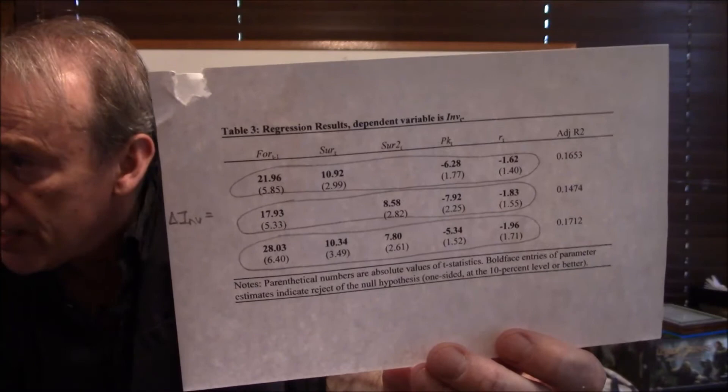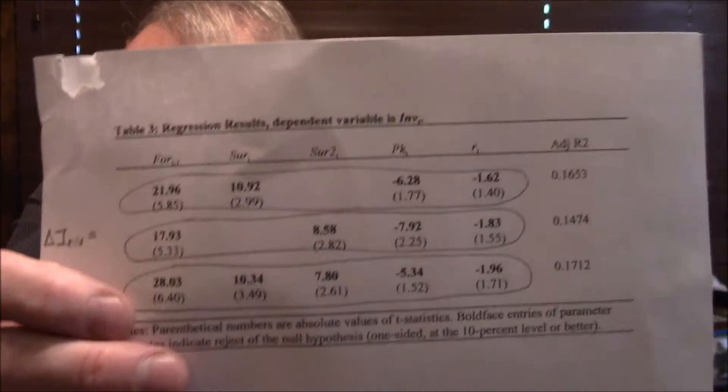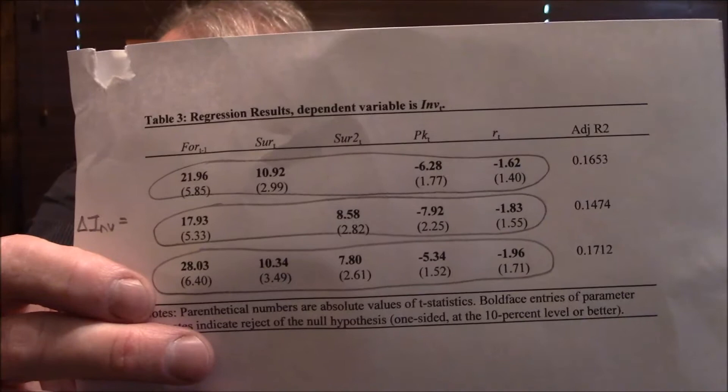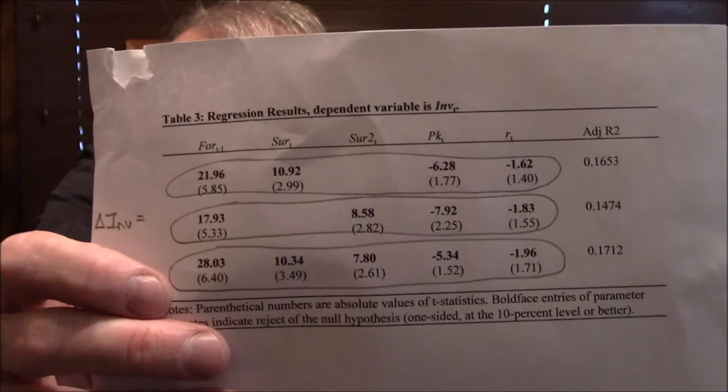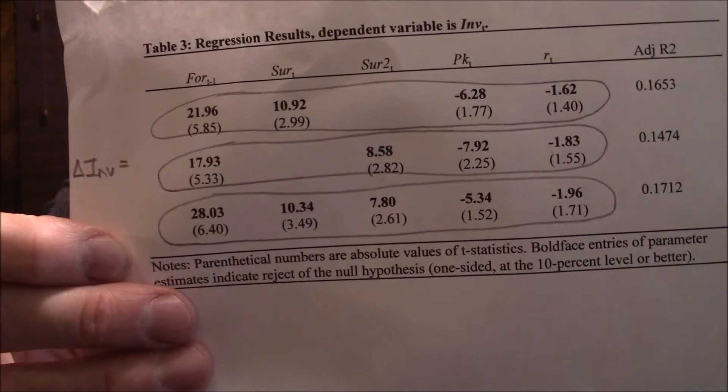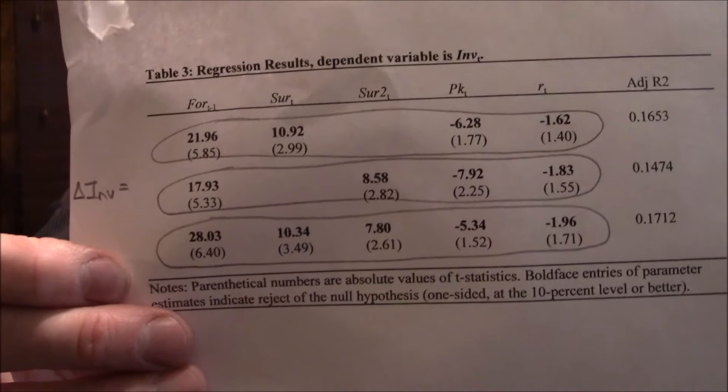You've got to include everything. You've got to include everything that really did affect real-world investment. I've got to include PK. I've got to include R. Even though I'm really only curious about FOR, SUR, and SUR2. But I've got to include the others. If I want to truly understand how much of this was being caused by FOR, I have to include the other stuff. Because then, now I can tell, independent of the other variables, what the impact of FOR was. For every one unit increase in FOR, investment increased by 28. For every one unit increase in FOR, there was a 28-unit increase in investment. Actually, 28-unit increase in change in investment, but nevertheless.